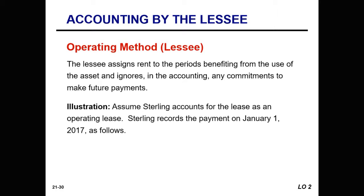The other method available is the operating method. In accounting for an operating lease, the lessee uses the operating method. The periodic rent associated with the lease is recognized in the period benefited by the leased asset. Under this method, the commitment to make future rental payments is not recognized in any of the accounts — only a footnote disclosure is given to the commitment to pay future rentals. The journal entry simply includes a debit to rent expense and a credit to cash.